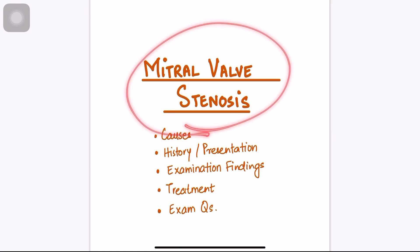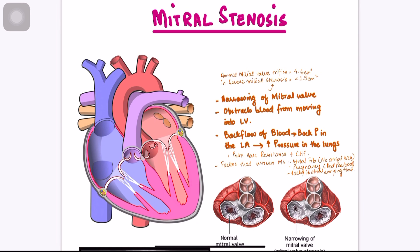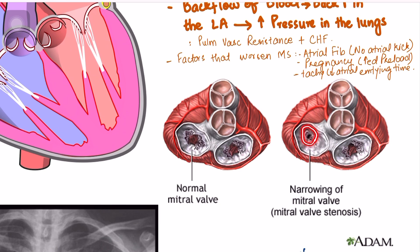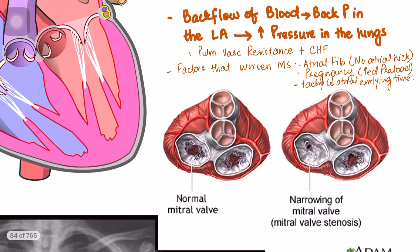Mitral valve stenosis is basically the narrowing of the mitral valve. Looking at a normal mitral valve, there is quite a wide diameter, but in stenosis the valve has become narrow. The normal diameter of the mitral valve is about four to six centimeters square, and when it becomes less than 1.5 centimeters square, that is when there is severe mitral stenosis.